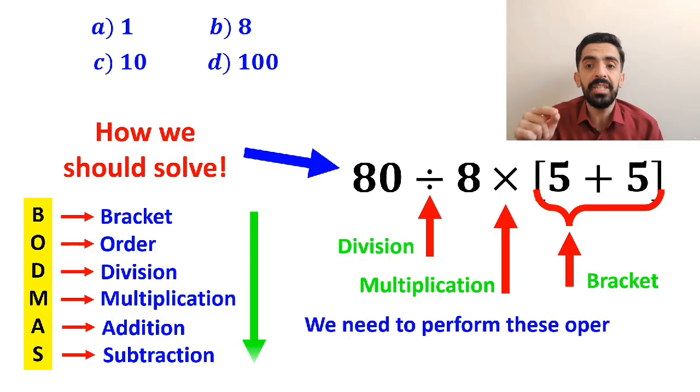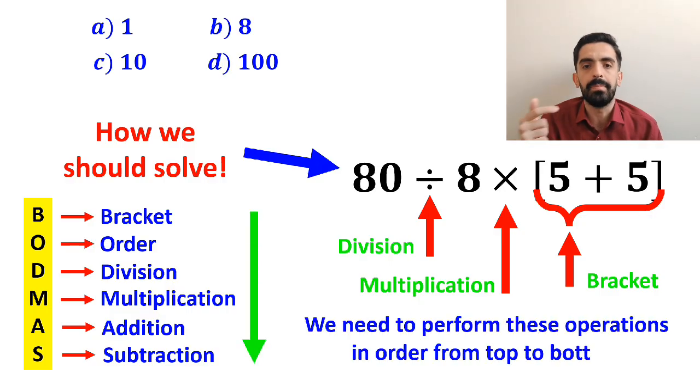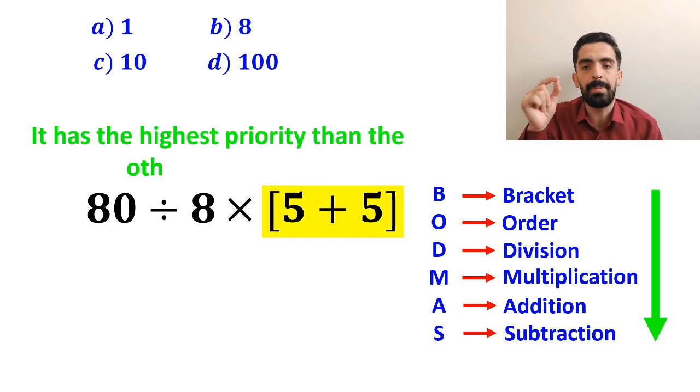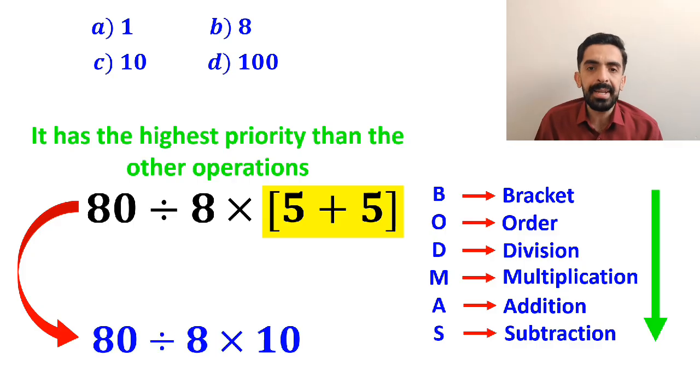We need to perform these operations in order from top to bottom. So, we'll start with the bracket first because it has the highest priority. This expression simplifies to 80 divided by 8 multiplied by 10.